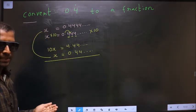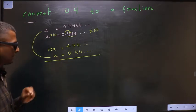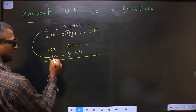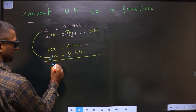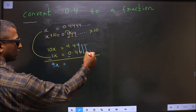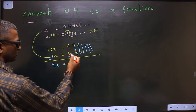Next step is to subtract these two. Put a negative sign here. 10x minus 1x is 9x. Here all the 4s will cancel out, so you're left with 4 minus 0, which is 4.